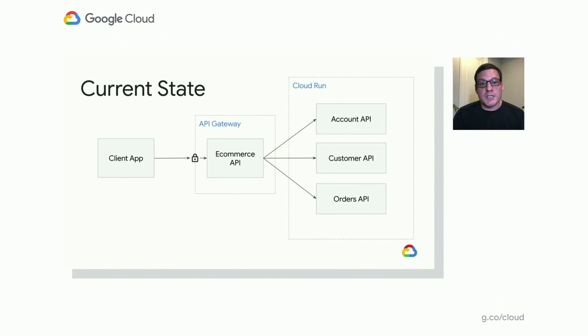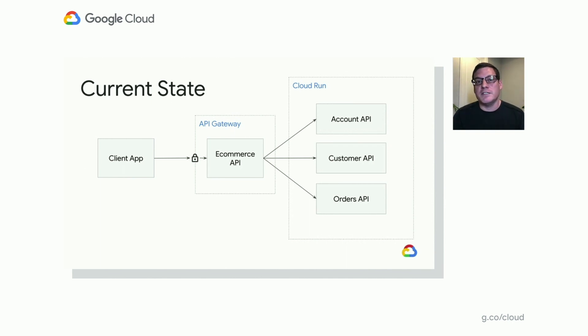We've set up our API Gateway, configured it to point to our Cloud Run services, and now we've added security on top of it. But if this were a real production API, we're going to have to actually operate and maintain and manage this thing. A big part of that is going to be monitoring our API to make sure that it's working the way we expect. So let's jump into our next demo and take a look at how we can use Cloud Logging and Cloud Monitoring to set up an alert so that if something's going wrong with our API, we'll get alerted about it.